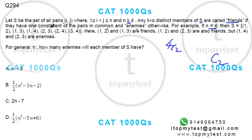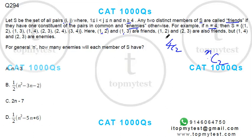The number of elements in S will be nC2 — each of them is a pair of two members. Now applying the concept of friends and enemies: (1,2) and (1,3) are friends; (1,2) and (2,3) are friends. But (1,4) and (2,3) are enemies because they have nothing in common.